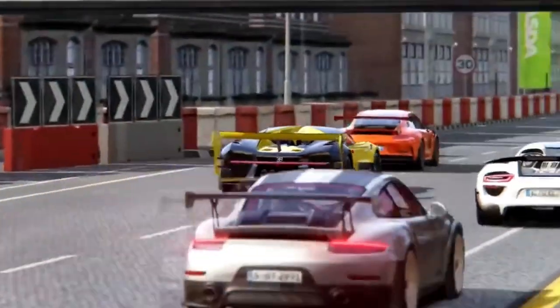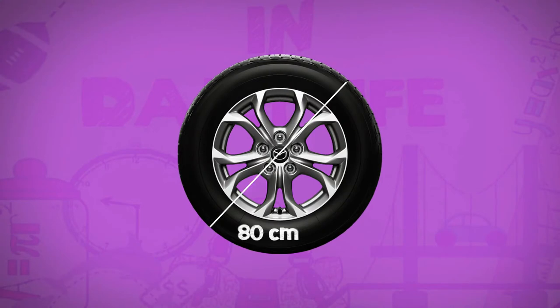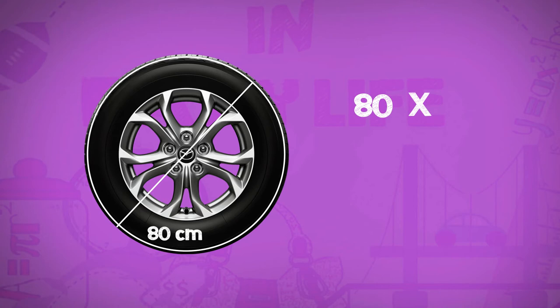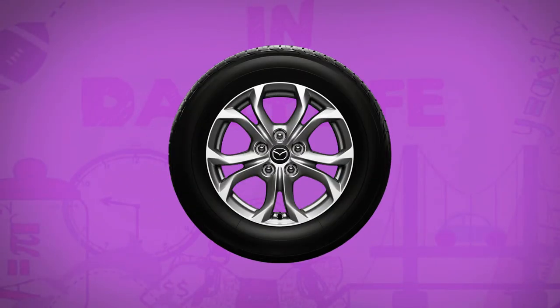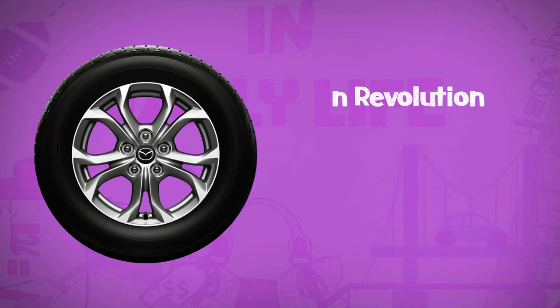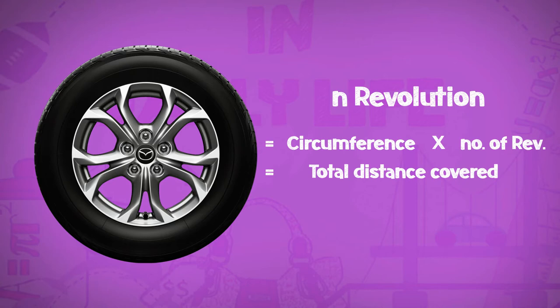This math is used in circular tyres of vehicles also. If a wheel has a diameter of 80 cm, then its circumference will be 80 multiplied by 3.14, that is 251.2 cm. It means the wheel will cover this distance in one complete revolution. So for n revolutions, we multiply the circumference by the number of revolutions to get the total distance covered by the wheel.